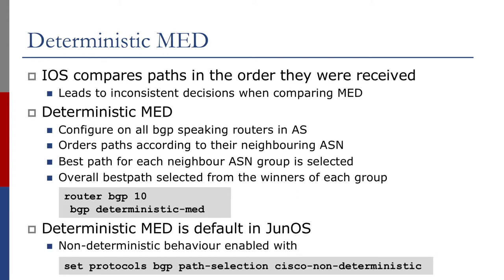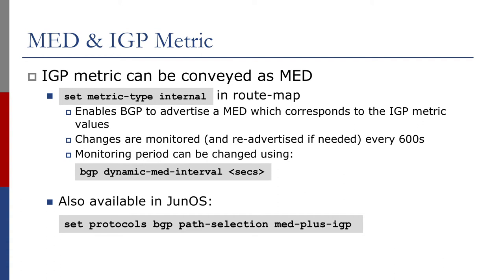Other implementations tend to implement deterministic MED by default. In Cisco IOS, you can also convey the IGP metric as an MED. This lets operators determine accessibility to their network from peers based on the bandwidth or at least the IGP metric values within their backbone, allowing operators to do more fine-grained load balancing — especially when their backbone is made up of many different sized links.